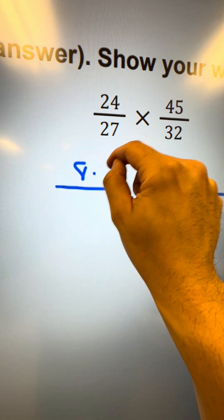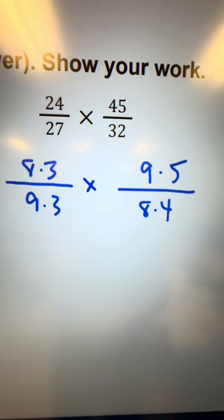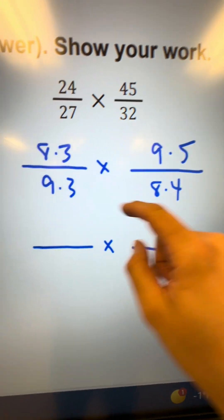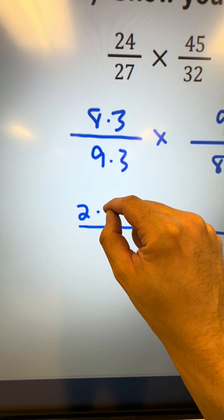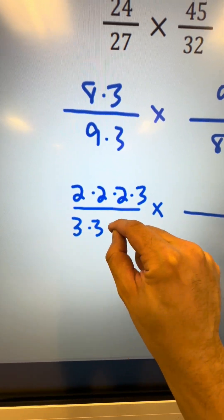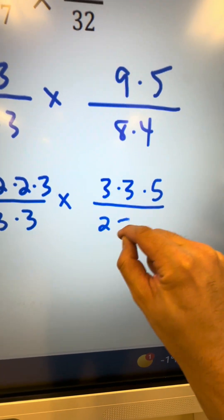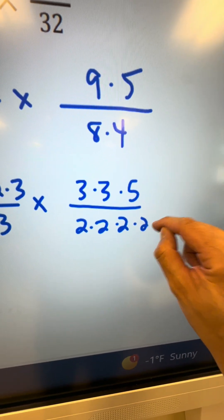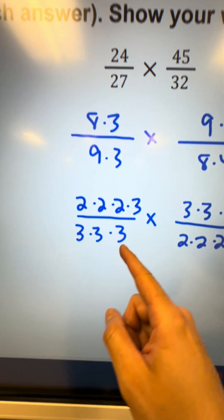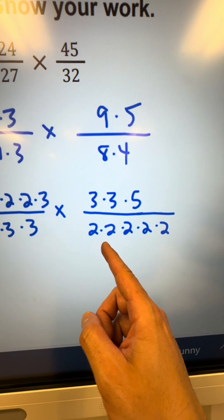In this problem, 24 is 8 times 3, and 27 is 9 times 3; 45 is 9 times 5, and 32 is 8 times 4. Whatever is not a prime number, I break it down further. 8 can be rewritten as 2 times 2 times 2, keep the 3; 9 is 3 times 3, keep the 3; 9 is 3 times 3 again, keep the times 5; 8 is 2 times 2 times 2; and 4 is 2 times 2. Notice there are only prime numbers shown here, and when you multiply them all together you get back the original number.